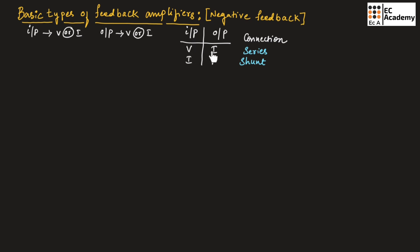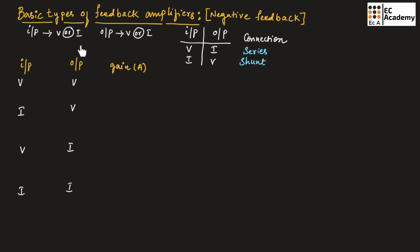If input is voltage and output is current, such type of connection is known as series connection. If input is current and output is voltage, such type of connection is known as shunt connection. So these are the four combinations of input and output: voltage-voltage, current-voltage, voltage-current, and current-current.